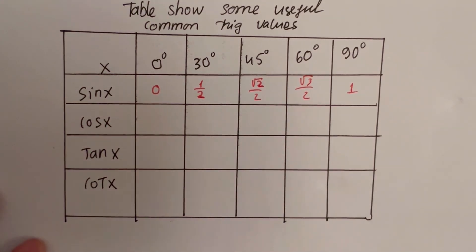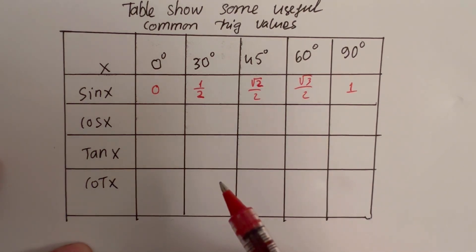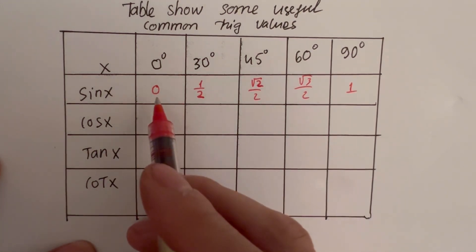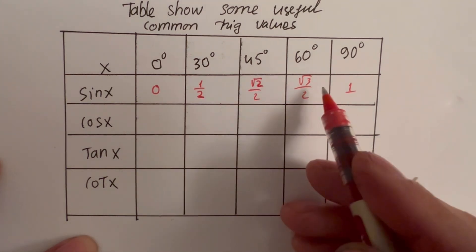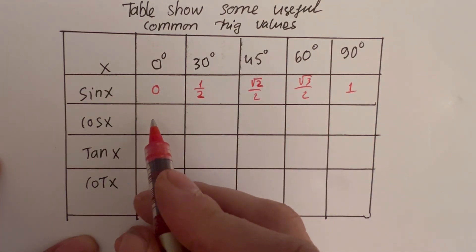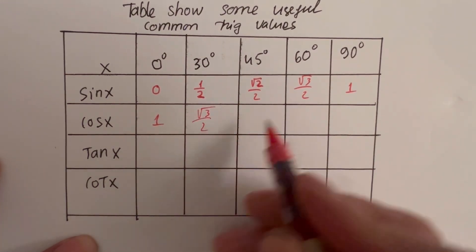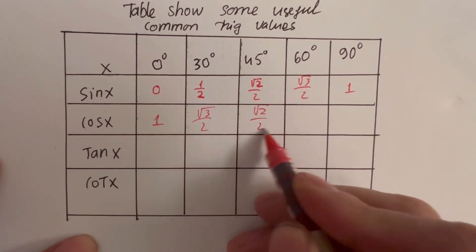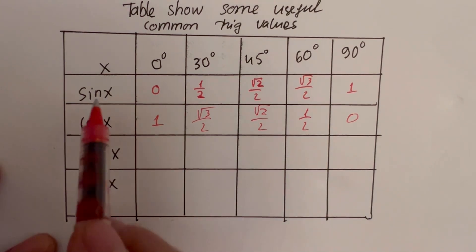Now for cos x — cos x will be the opposite of sin x. You see: sin x goes 0, 1/2, √2/2, √3/2, 1 — so cos x is the reverse: 1, √3/2, √2/2, 1/2, 0. That's why you just remember sin x, and cos x is just the opposite of sin.